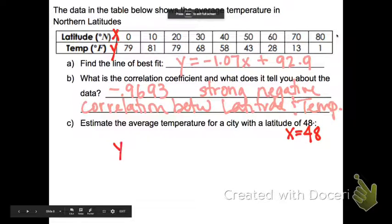So I'm going to substitute that into this equation. So negative 1.07 times 48 instead of x plus 92.9.